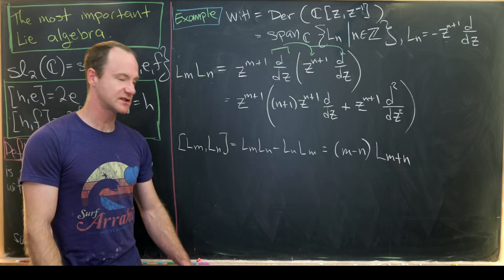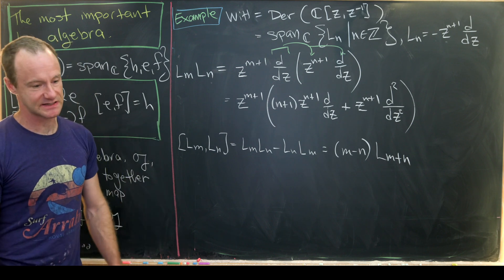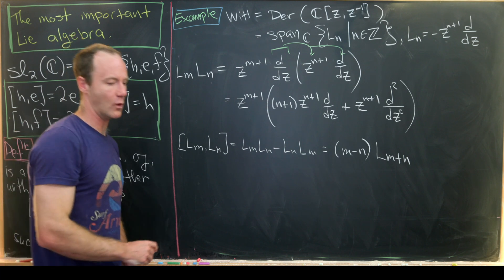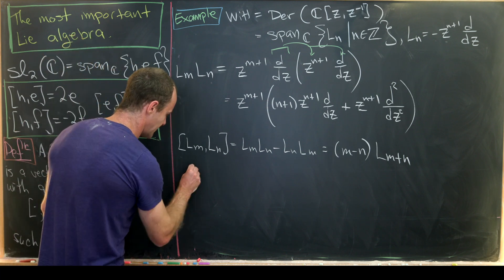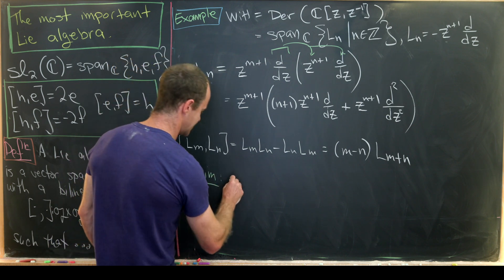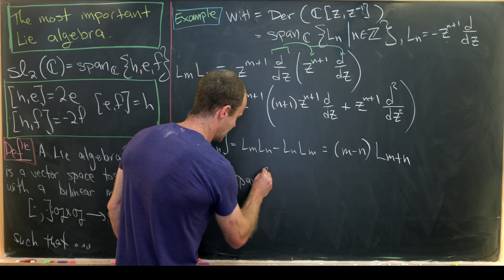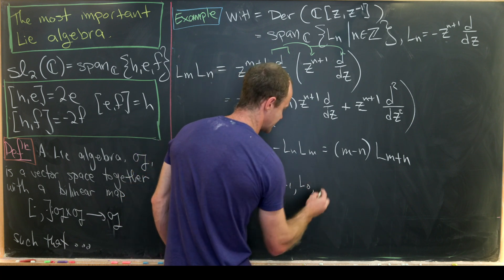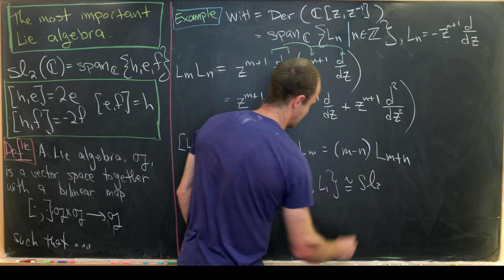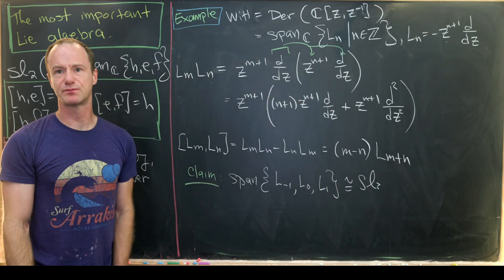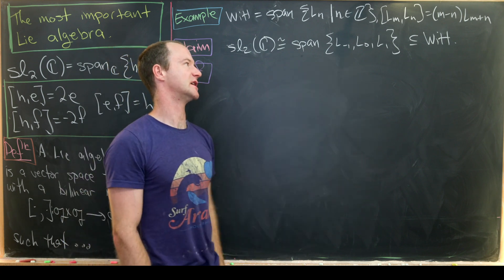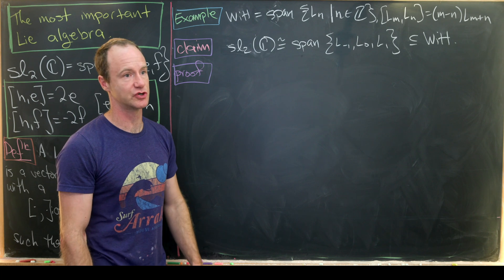The commutator is [Lₘ, Lₙ] = Lₘ Lₙ − Lₙ Lₘ = (m − n) L_{m+n}. This gives us infinitely many SL2 triples inside the Witt algebra, but we'll just look at one of them. The claim is that the span of L₋₁, L₀, and L₁ is isomorphic to SL2.